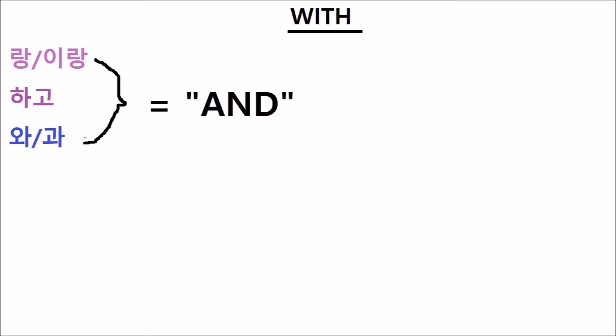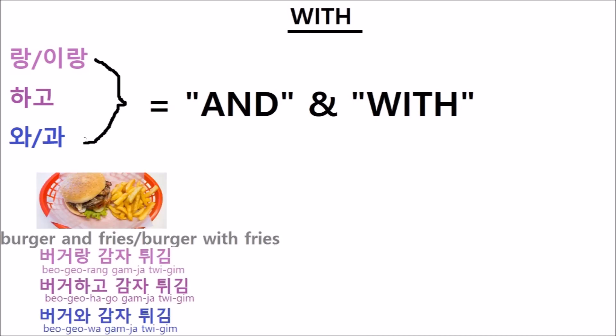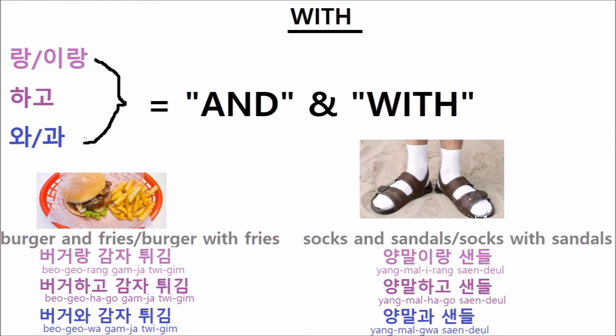Now, you've seen the title of this video — we're supposed to learn 'with' as well. But what if I told you that you already have learned the word 'with'? Because these words not only mean 'and,' but also 'with.' I never really realized just how easily interchangeable the words 'with' and 'and' actually are. You can say 'burger and fries' or 'burger with fries.' You can say 'socks and sandals' or 'socks with sandals.' It's practically the same thing.